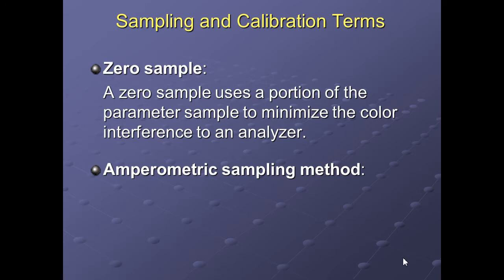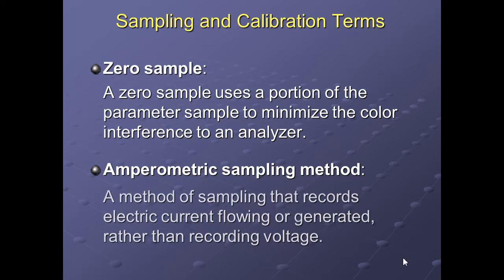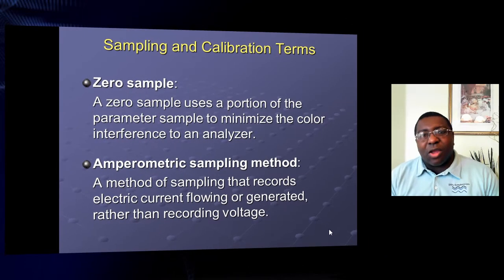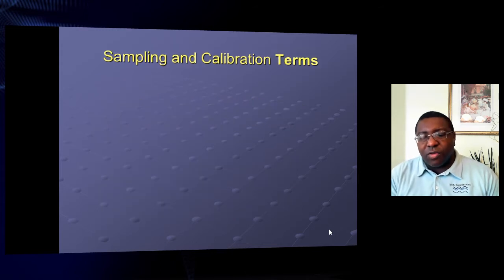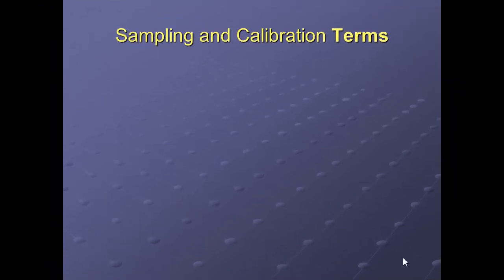Amperometric sampling methods use electric currents flowing to generate readings rather than recording voltage — so you're using electrical current, either hand-cranked or plugged in, and recording a milliamp reading from the meter.